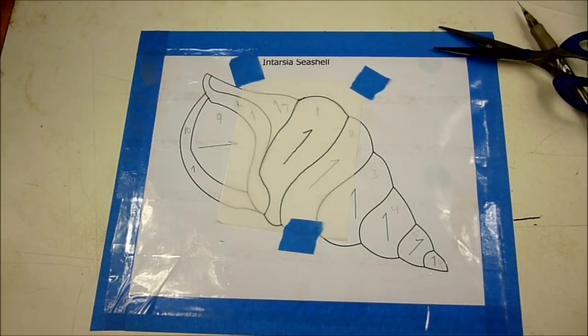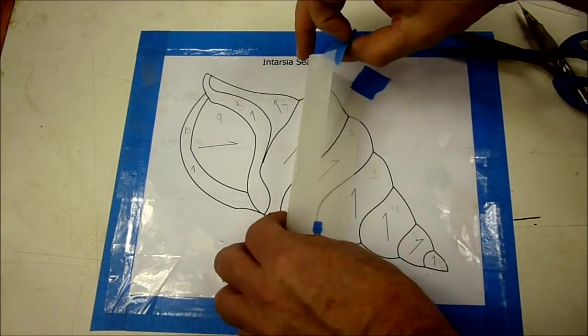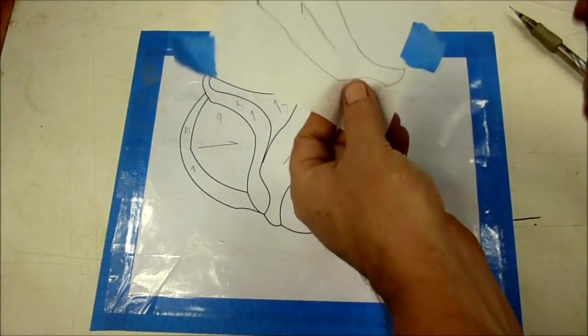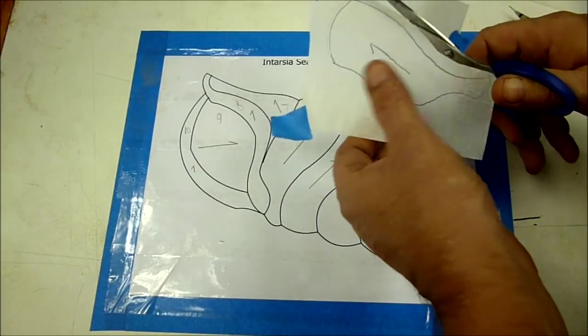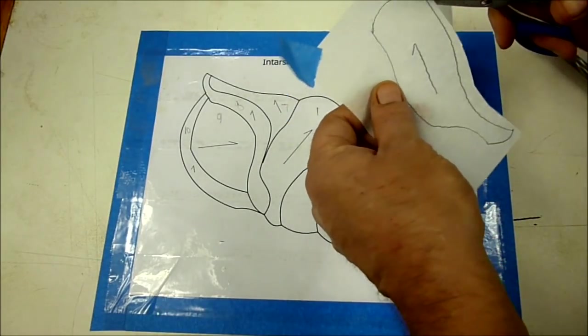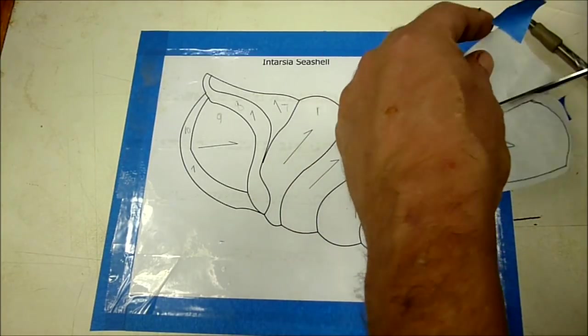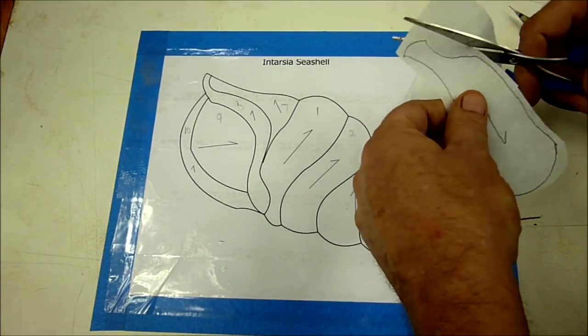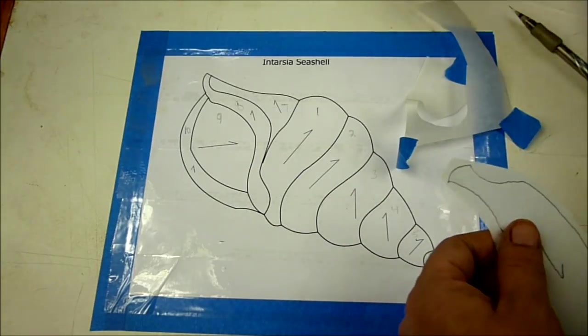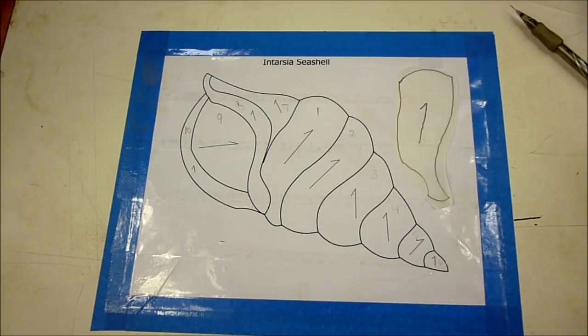Now that it's traced out, I'll simply pull the piece up, take my handy dandy little scissors here, and just cut the basic outline. Doesn't really matter how close you get to the line. Now as you can see, we have our first piece of tracing paper cut out to put on our first piece of wood.